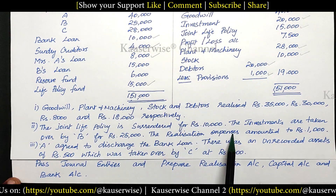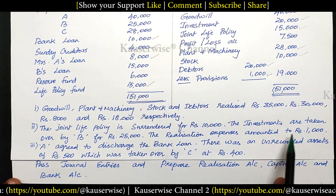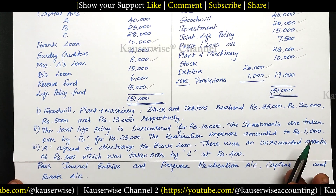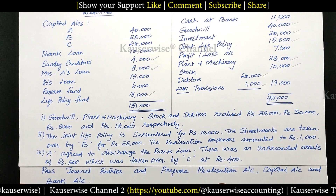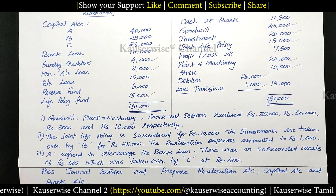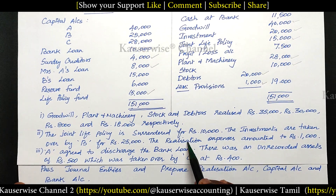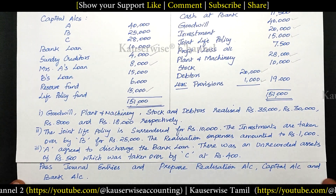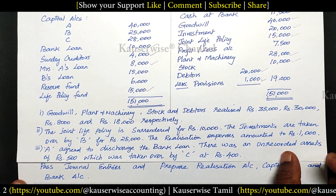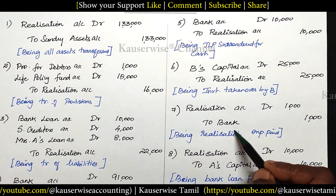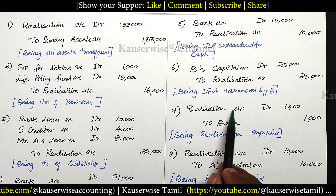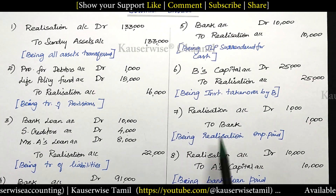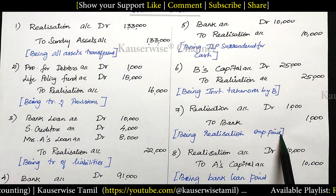Fourth adjustment: realization expenses amounted to rupees 1,000. For any payment, the entry is: Realization Account Dr. to Bank Account — being realization expense paid off.